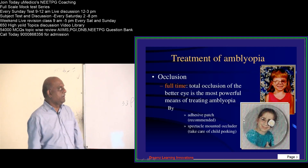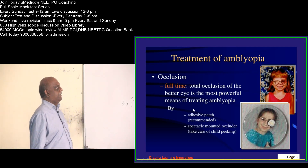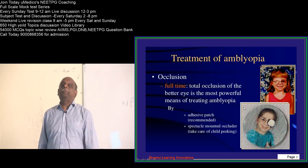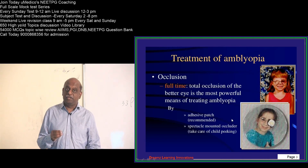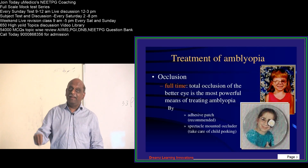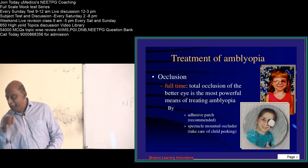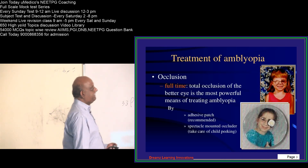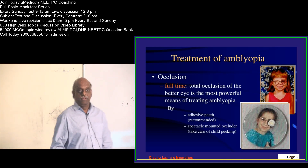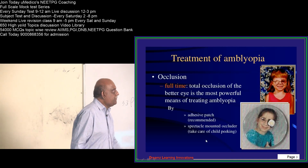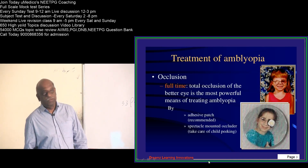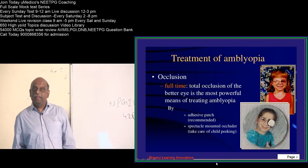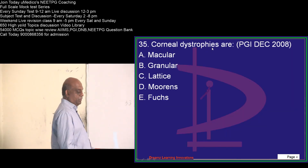Which eye will you occlude? You will occlude the better eye. The better eye occlusion is considered the best way to treat amblyopia. The examiner can ask whether to occlude the better or bad eye — it is the better eye that is occluded. Occlusion can be done either by applying an adhesive patch, which is the recommended therapy, or by putting a spectacle-mounted occluder.